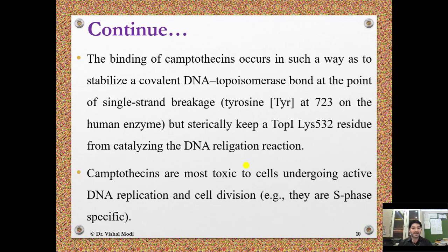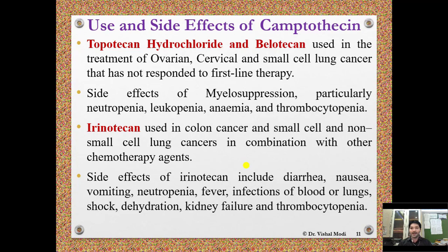Use and side effects of camptothecins: Topotecan hydrochloride and belotecan are used in the treatment of ovarian, cervical, and small cell lung cancer that has not responded to first-line therapy. Side effects of both drugs include myelosuppression, particularly neutropenia, leukopenia, anemia, and thrombocytopenia. Irinotecan is used for colon cancer and small cell and non-small cell lung cancers in combination with other chemotherapy agents. Side effects of irinotecan include diarrhea, nausea, vomiting, neutropenia, fever, infection of blood or lungs, shock, dehydration, kidney failure, and thrombocytopenia.